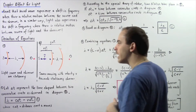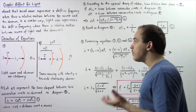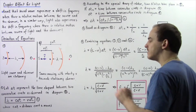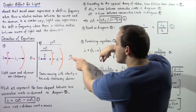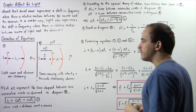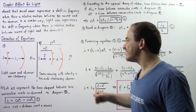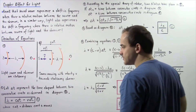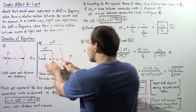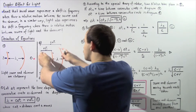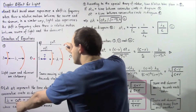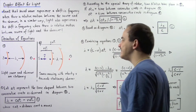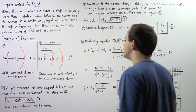Moving on to Step 1: let delta T represent the time interval between the two consecutive crests, as observed in Diagram B. We can represent lambda in terms of these two quantities. Lambda, the wavelength, is equal to C multiplied by delta T minus V multiplied by delta T. Let's call this Equation I.